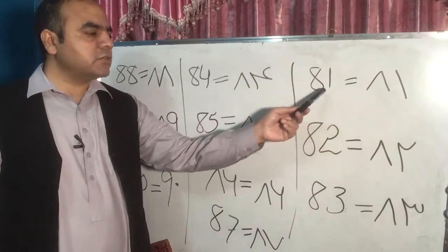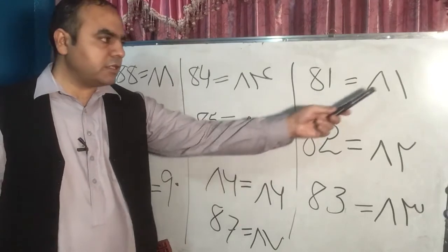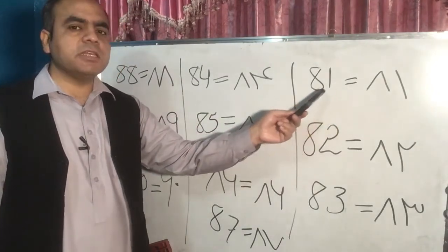Yaw atya. Yaw atya is equal to 81. Yaw atya means 81.